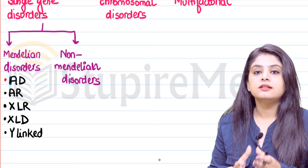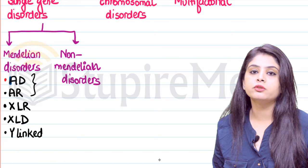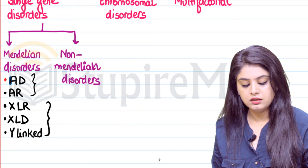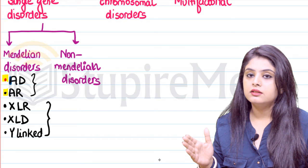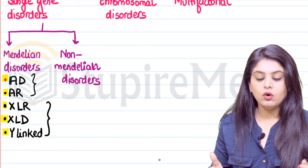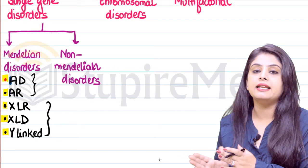So disorders can either be related to the autosomal chromosomes or to the sex chromosomes. When talking about autosomes, we have autosomal dominant and autosomal recessive. When talking about sex-linked chromosomes, we have X-linked recessive, X-linked dominant, and Y-linked. All of these form the Mendelian disorders because they follow classical Mendelian rules.